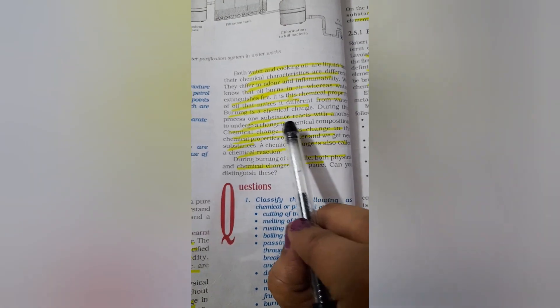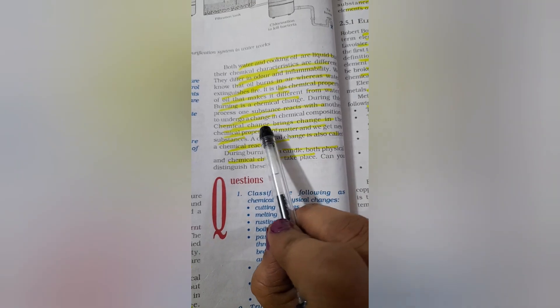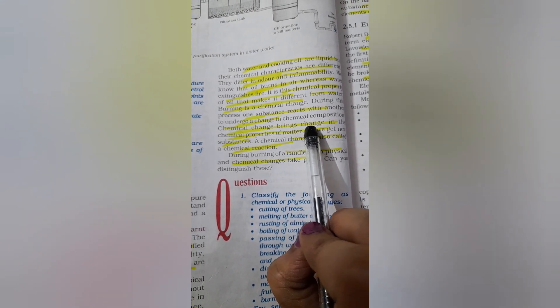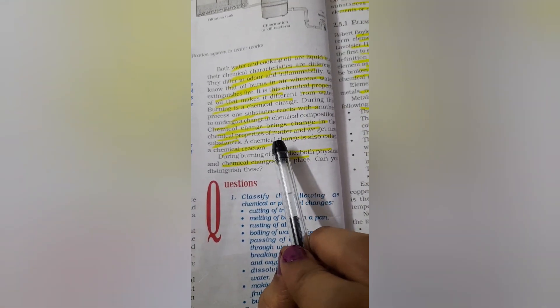The chemical property, because during this process one substance will react with another to undergo change in chemical composition. Chemical change brings change in chemical properties of matter and as a result of chemical change we get new substances.